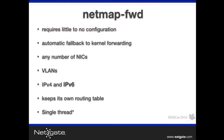NetMap Forward was designed to require little to no configuration at all. How does it do that? NetMap basically only needs the IPs and the interfaces for ARP building, and then it manages its own routing table, ARP table, NDP table, and all that stuff.